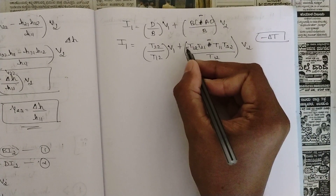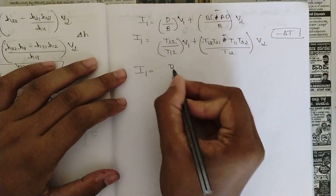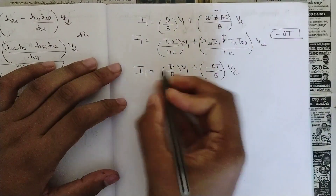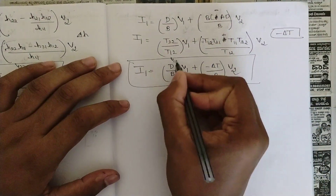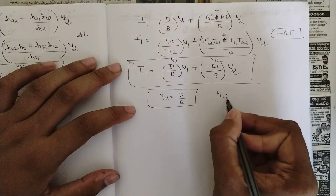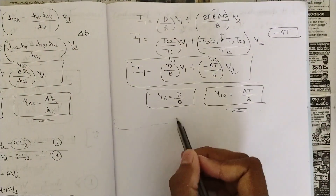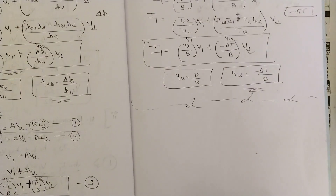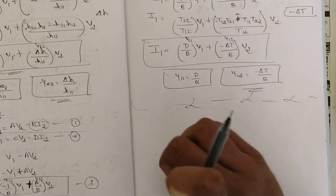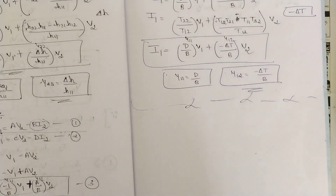So I1 = (D/B)·V1 + (minus delta T/B)·V2. Comparing with I1 = Y11·V1 + Y12·V2: Y11 = D/B, and Y12 = minus delta T / B. We have now represented Y parameters in terms of all three other parameter sets — Z, T, and H. In the next session we are going to discuss H parameters in terms of Y, Z, and T parameters. That's all for this session — like and share this video, thank you.